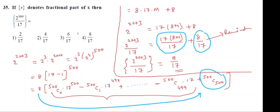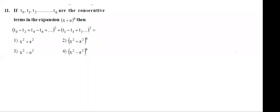So 2 power 2003 divided by 17 is equal to 8 by 17 as the answer. Which option is correct students? Option 4. This is the answer — May 2020 exam question. Next: if t0, t1, t2, and so on up to tn are the consecutive terms in the expansion.